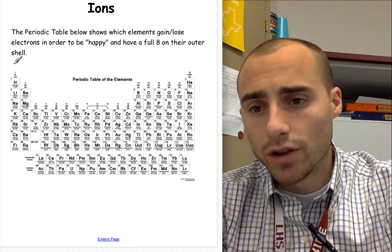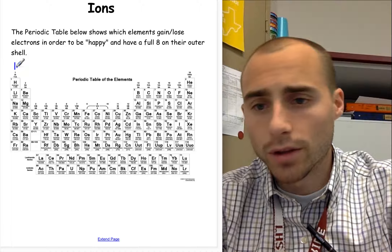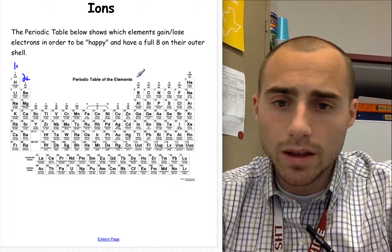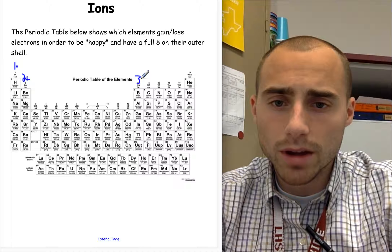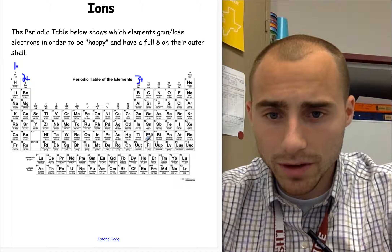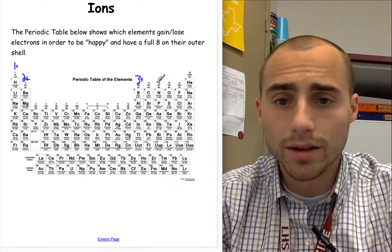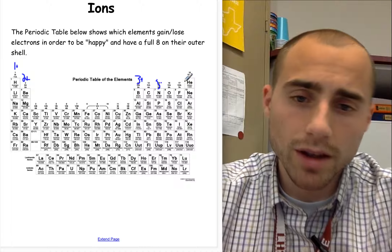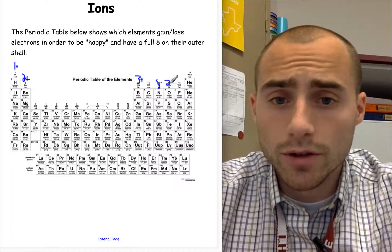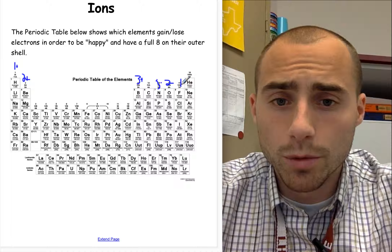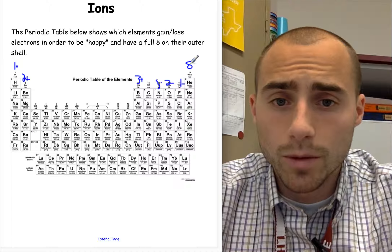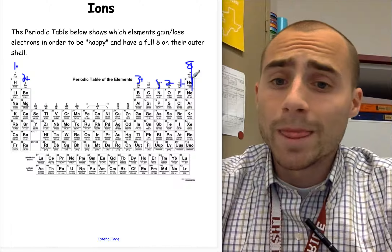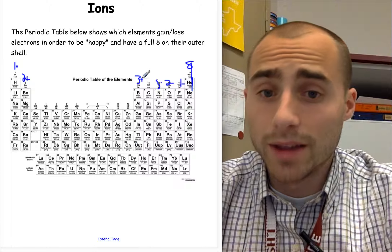The periodic table shows which elements gain or lose electrons in order to be happy. I would label these charges on your periodic table as well: group one is one plus, group two is always two plus, group three is always three plus. Then it reverses — we skip the carbon column because those can be plus or minus. Nitrogen's group is three minus, oxygen's group is two minus, and fluorine's group is one minus. They're all trying to get to eight valence electrons. That's how we know how many electrons they will lose or gain — by their group number.